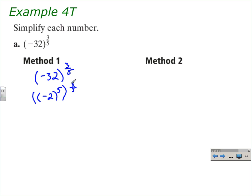When we have a power raised to a power, we multiply those two powers. So we have negative two to the fifth times three-fifths power. Five times three-fifths equals three, leaving us with negative two to the third power, and negative two cubed is negative eight.